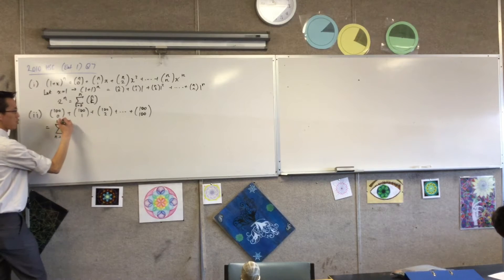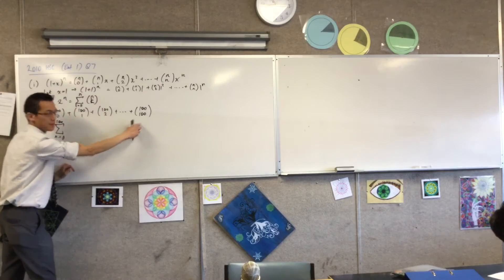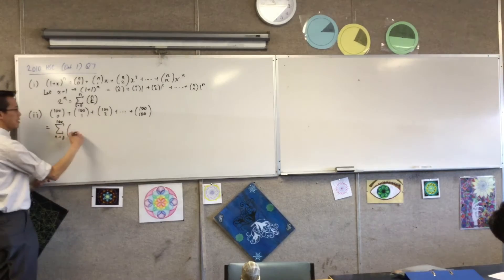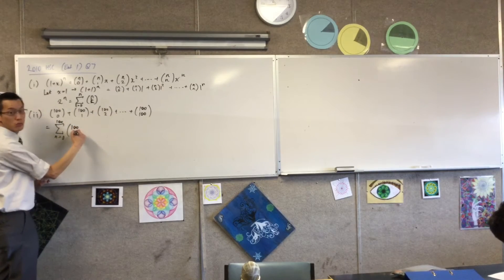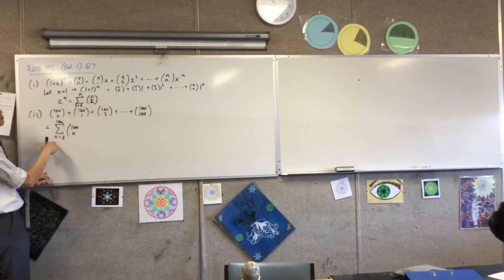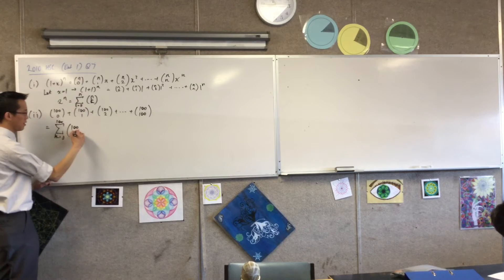So I'm going to write that as from n equals 0, there's my sigma notation, and I go all the way up to 100. And the thing that I'm adding up is 100 choose n. Well, I've said k there, I suppose I should say k. Yeah, it's fine. Doesn't matter. I mean, it's just a dummy variable.